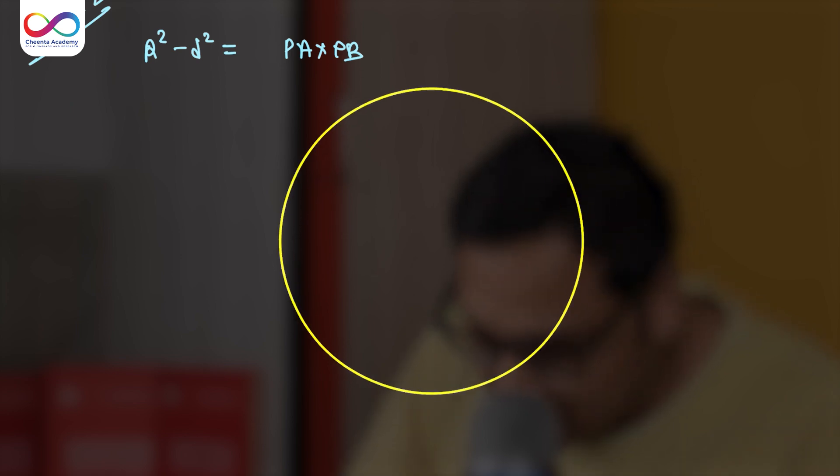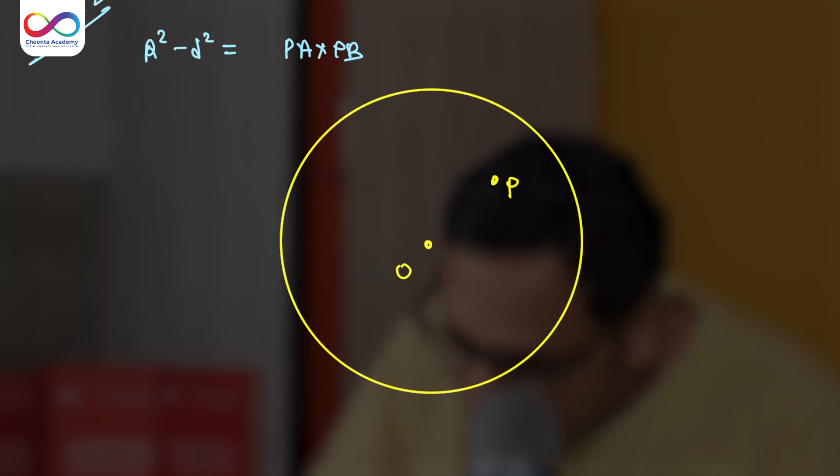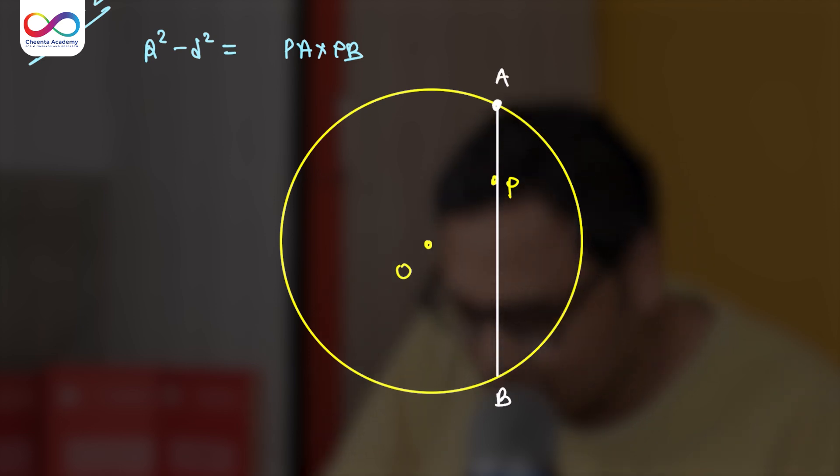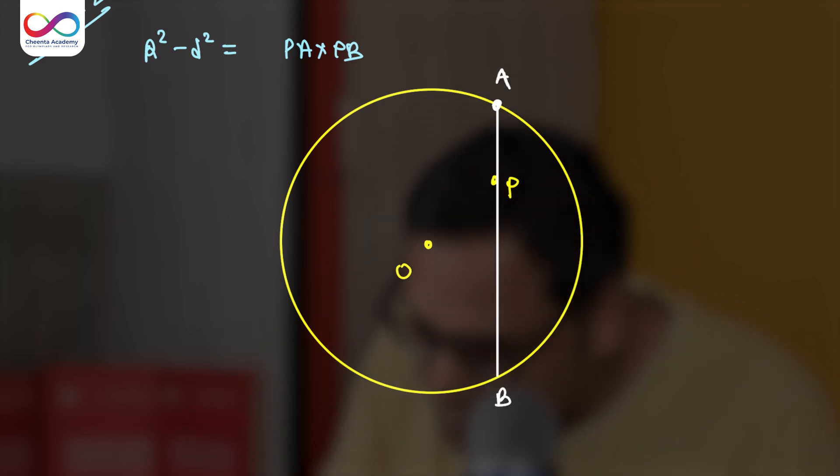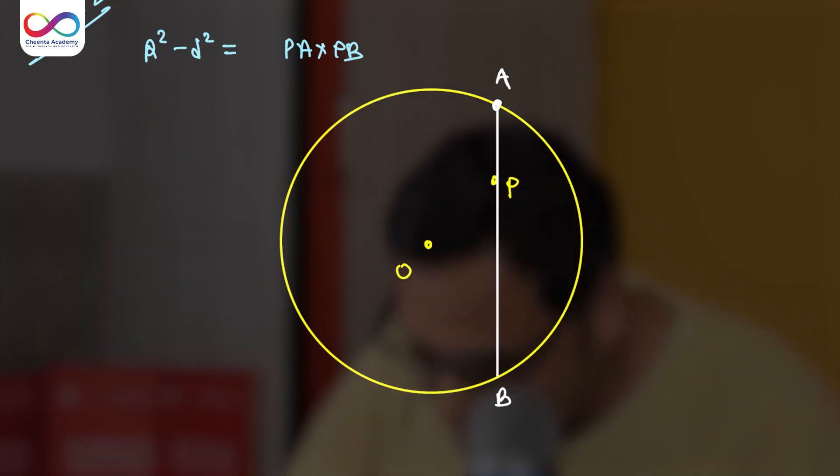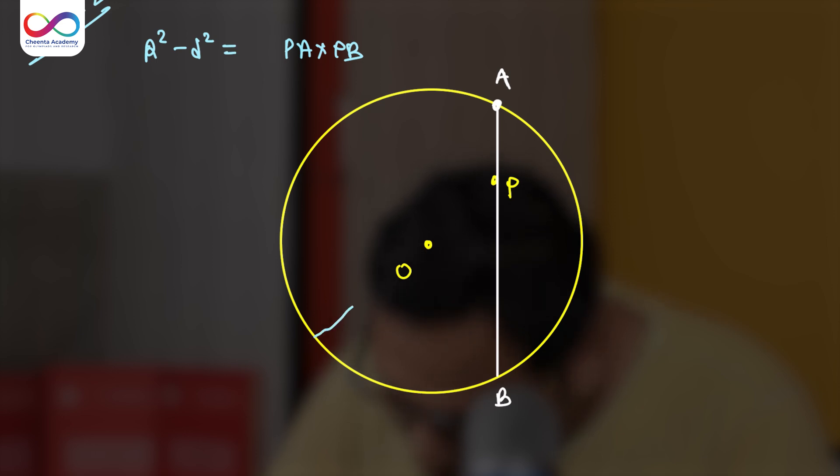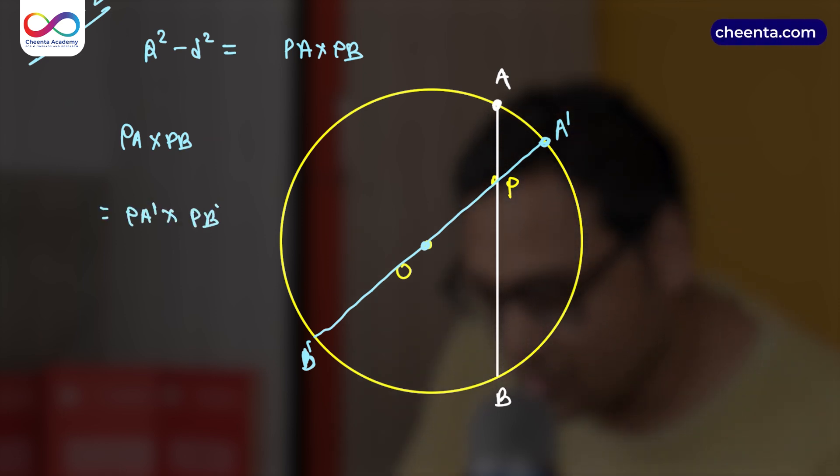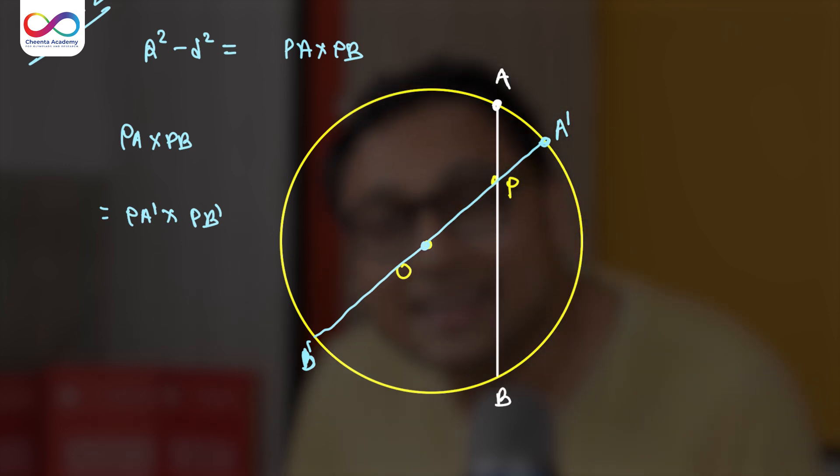Suppose this is a circle, suppose this is center point O and this is P. Now I draw any chord - PA times PB is the invariant or that is the claimed invariant. Now what I'm going to do is I'll draw another chord which is a diameter. So it passes through P and it's a diameter. So I draw it like this. This is A', B' and this is O. Now I know that PA times PB equals PA' times PB' because that's the definition of the power of the point. That's claim 1.